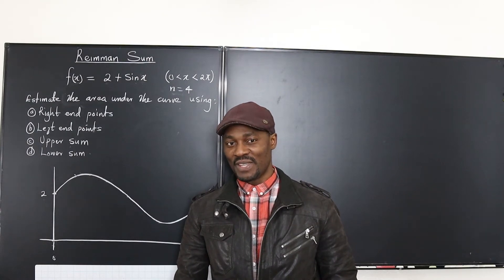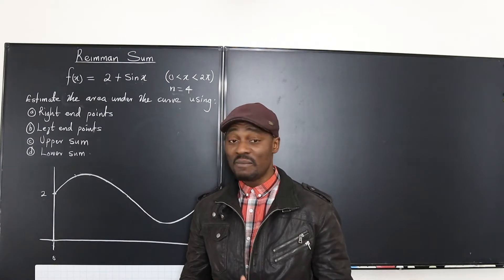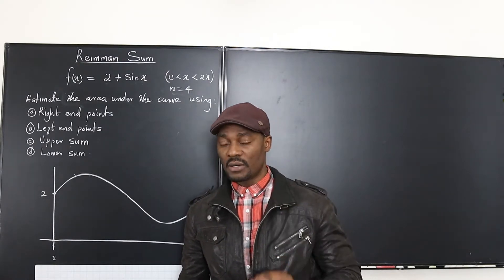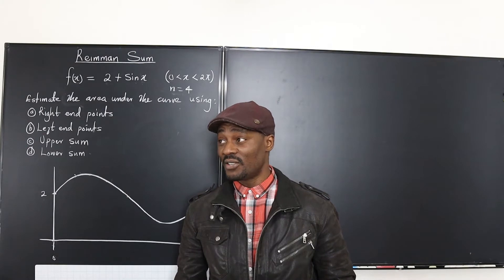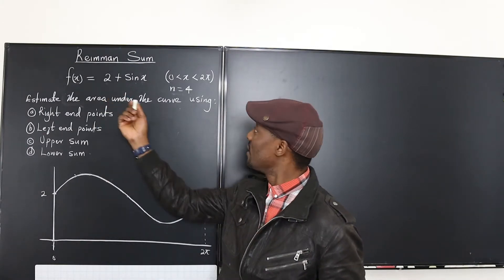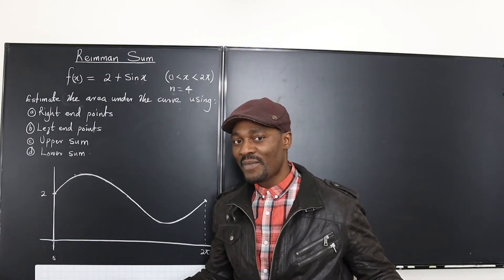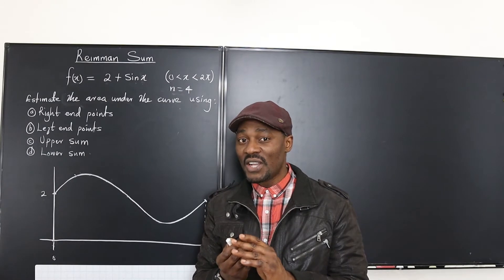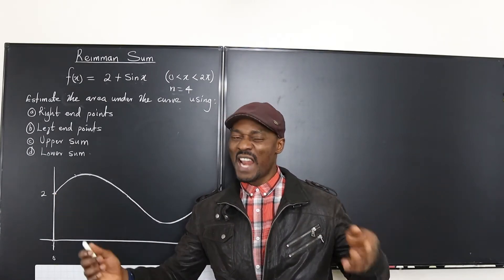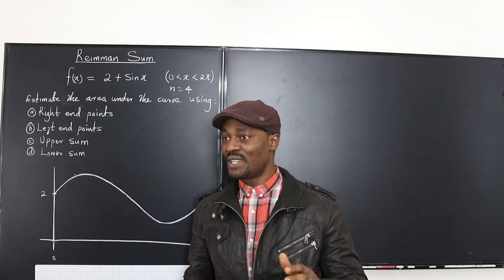Hello and welcome to another video. In this video I'm going to show you how to take estimates using Riemann sums of the area under a curve. You might ask: why do I have to estimate when I can get the exact answer by just integrating the function and evaluating from 0 to 2π? Well, sometimes the function is not defined over the interval. You can actually integrate but you'll be committing a grave error if you decide to evaluate.